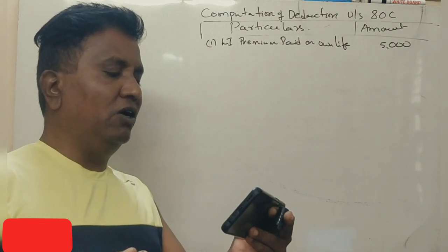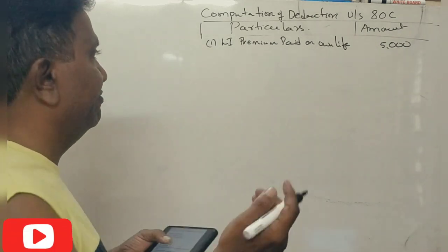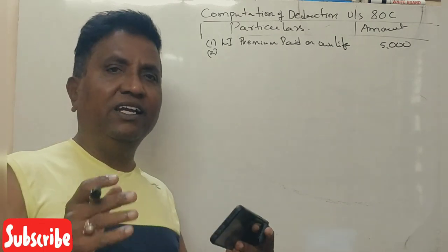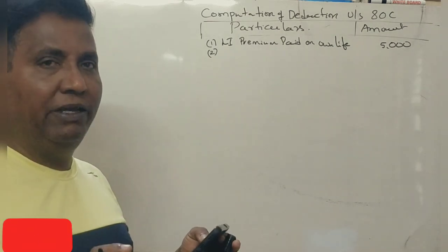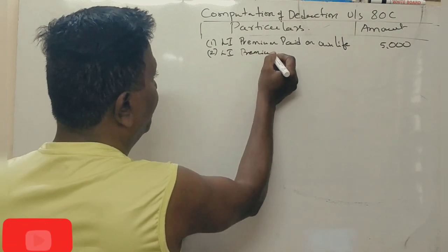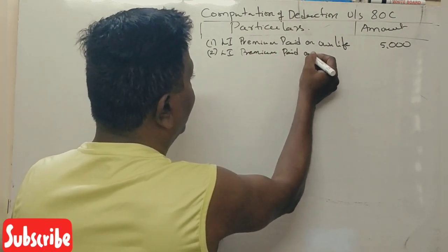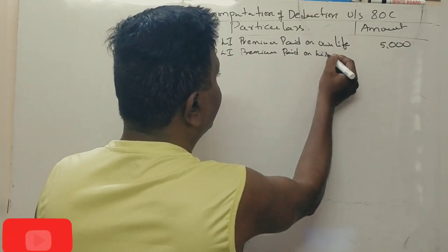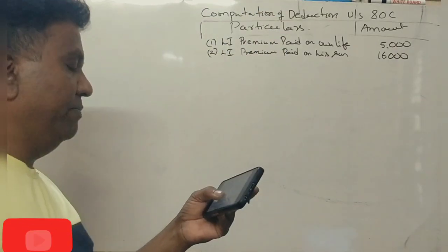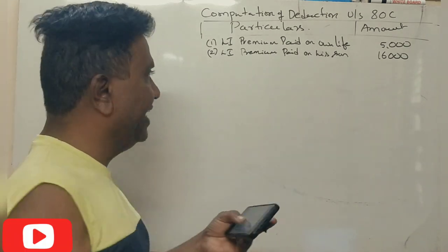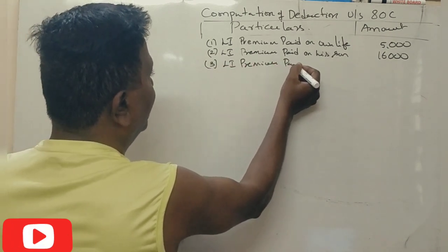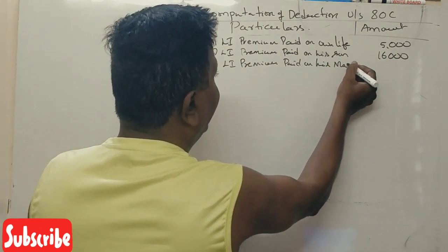Premium paid 16,000 on life policy of major son's life. He is major, minor, married daughter, married son. So premium paid on his son amounts to 16,000 rupees. Next, premium paid 1,000 rupees on the life policy of married daughter. So life insurance premium paid on his married daughter.